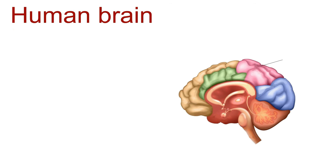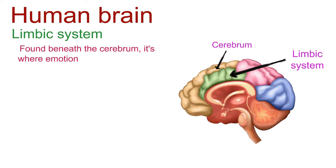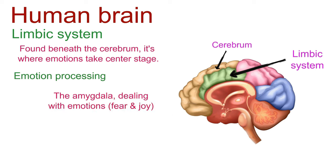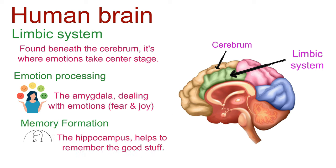And now, let's dive into the emotional hotspot, the limbic system. Found beneath the cerebrum, it's where emotions take center stage. Key players and functions include emotional processing and memory formation. The amygdala, your brain's drama director, deals with emotions like fear and joy. The hippocampus, your memory maestro, helps you remember the good stuff.